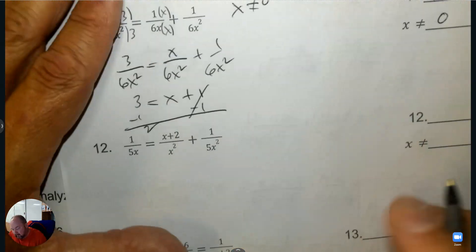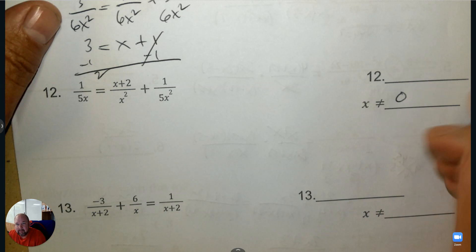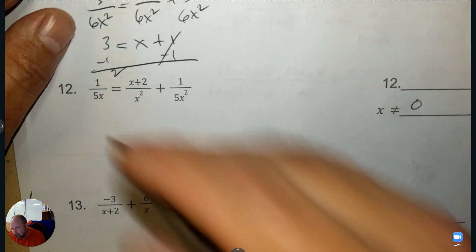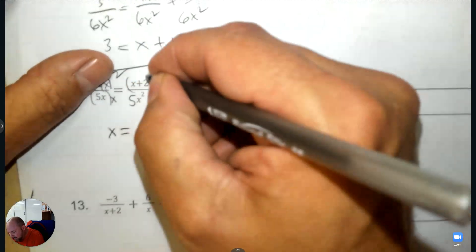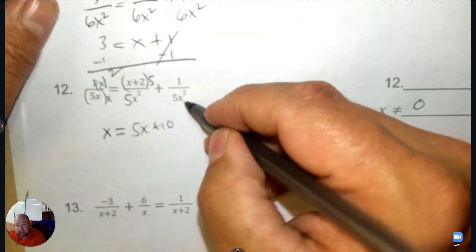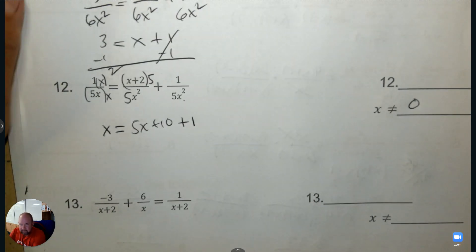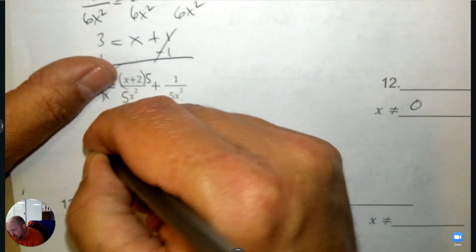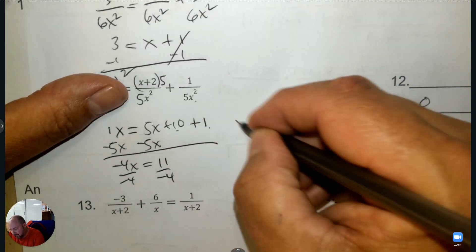Let's look at the next one — you try first. What can x not be? Again it's 0. Make all denominators the same by multiplying. Press pause and think about what to multiply. The second one I'm going to multiply by 5 — distribute: 5 times x and 5 times 2. The last one already matches so it stays — it's a 1. Then solve: subtract 5x. 1 minus 5 is negative 4, and 10 plus 1 is 11. Divide by negative 4 and you have your answer.